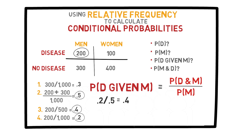My point here is that when we look at tables like this, conditional probabilities become much simpler and more intuitive. In fact, we can use this concept in solving many problems in real life scenarios. It is much easier to use relative frequency with actual numbers to determine conditional probabilities, and we will revisit this concept as we go throughout the course. Thank you for watching.